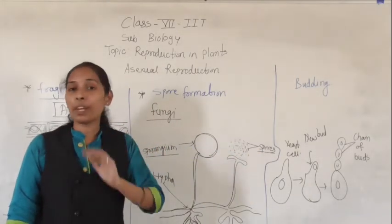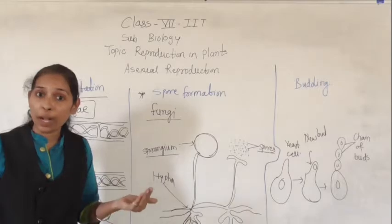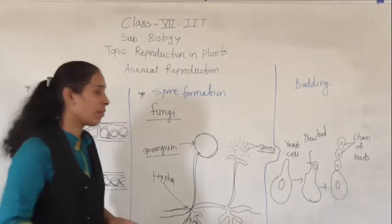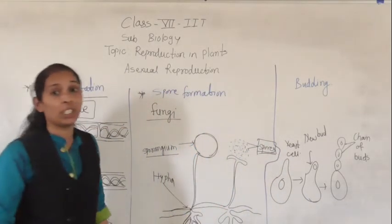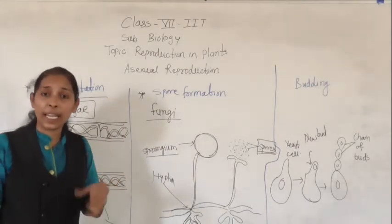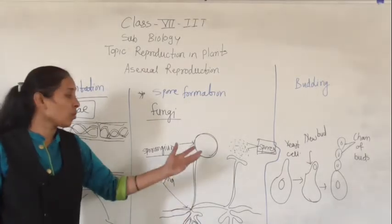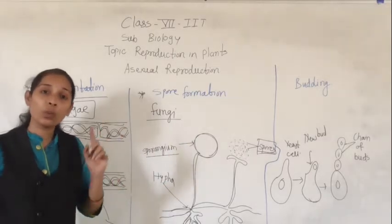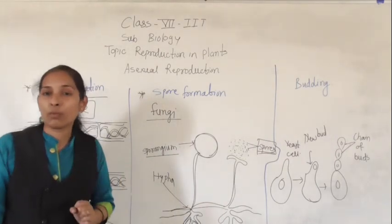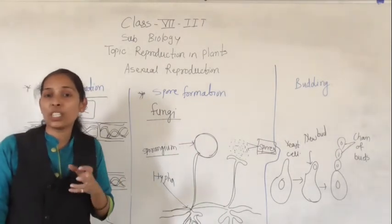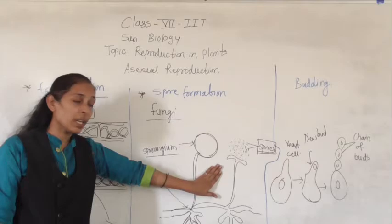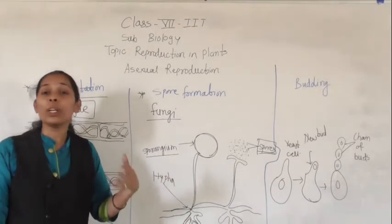When these spores get favorable conditions like air, water, and warmth, they start to germinate and form fungi. That is the main reason during the rainy season you can see cottony white structures on different surfaces like food, leather clothes, and walls — because during the rainy season the weather is more humid, and the moisture in the air is a favorable condition for the growth of fungi.